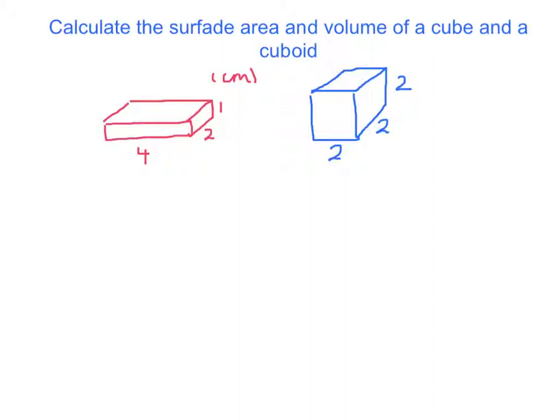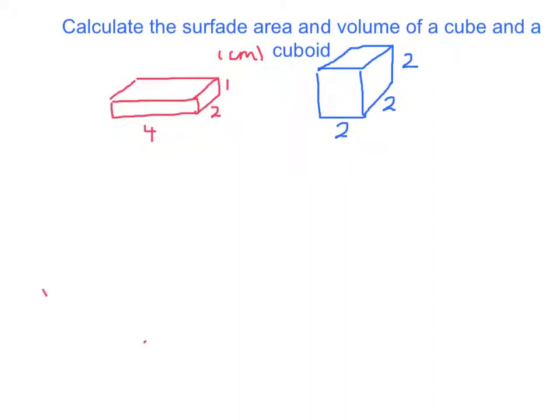What's going to happen when it comes to the surface area? The volume equalled 8 centimetres cubed for the blue, and the volume equalled 8 centimetres cubed for the red. Now let's look at how we would calculate the surface area. Let's start with the surface area of the cube because that's the easier one.